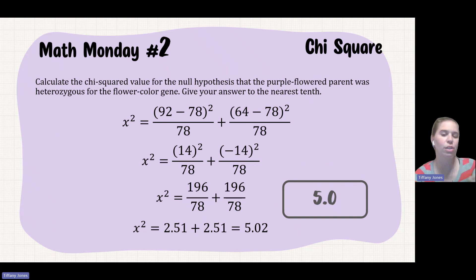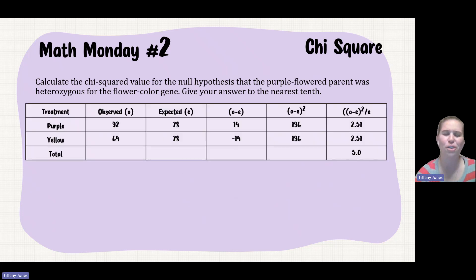Now, I don't actually use this formula when I do the math with my students. I use this chart. And so in the chart, I set it up where I've got my different groups there, where I've got the purple or the yellow. I put my observed, I put my expected. And then I know that I take this column minus this column. So observed minus expected gives me 14 and negative 14.